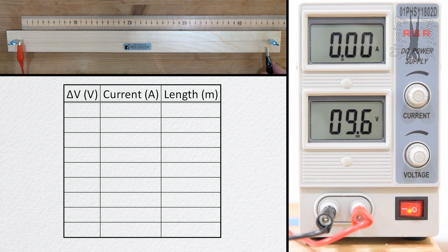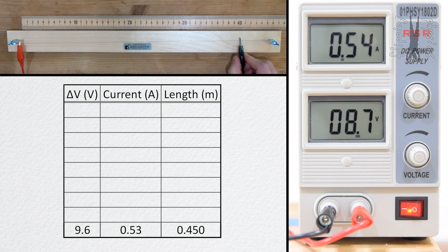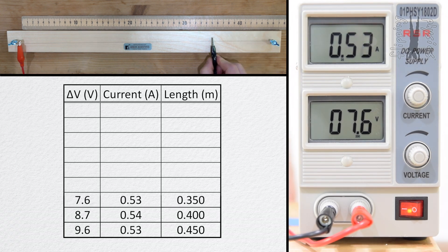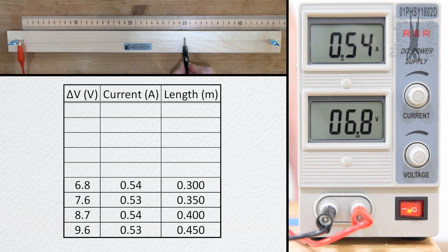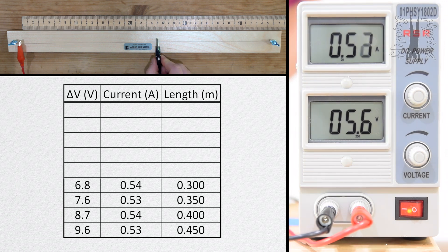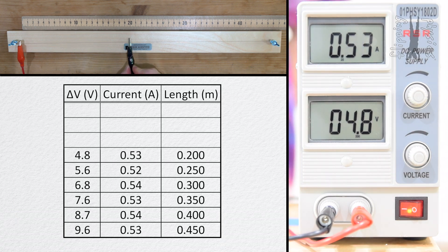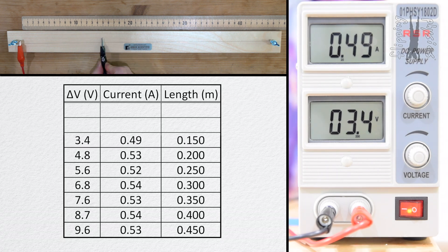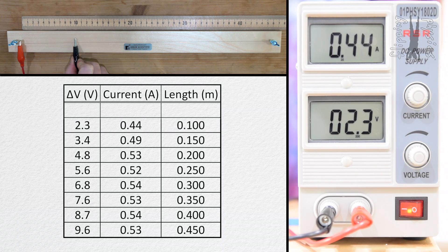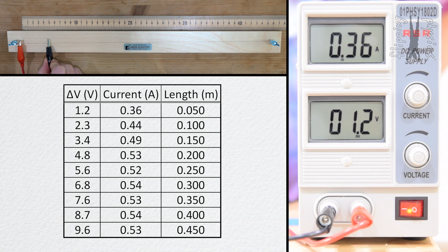Let's start at 45 centimeters, where we get an electric potential difference of 9.6 volts and a current of 0.53 amps. At 40 centimeters, 8.7 volts and 0.54 amps. At 35 centimeters, 7.6 volts and 0.53 amps. At 30 centimeters, 6.8 volts and 0.54 amps. At 25 centimeters, 5.6 volts and 0.52 amps. At 20 centimeters, 4.8 volts and 0.53 amps. At 15 centimeters, 3.4 volts and 0.49 amps. At 10 centimeters, 2.3 volts and 0.44 amps. At 5 centimeters, 1.2 volts and 0.36 amps.